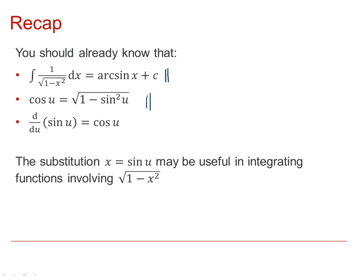All of these suggest that if we've got functions to integrate which include the square root of 1 minus x squared, then a substitution x equals sin(u) is going to be useful. And of course if x equals sin(u), then we can write that u is arcsin(x), or use the notation u equals sin⁻¹(x).